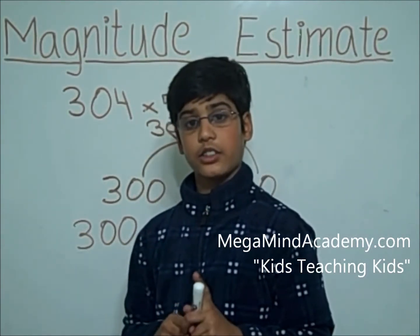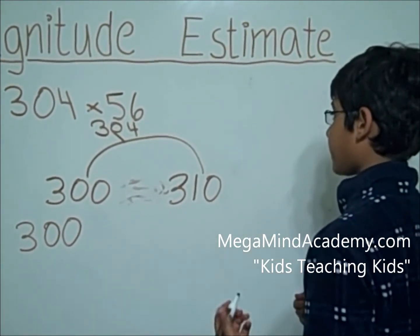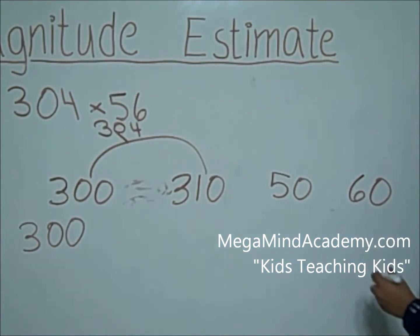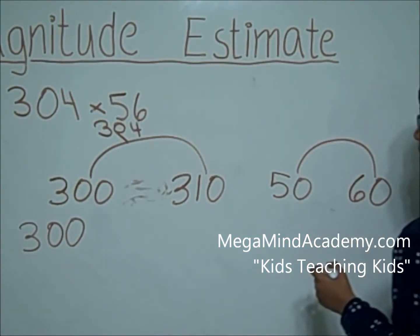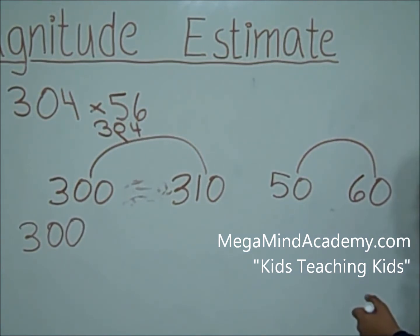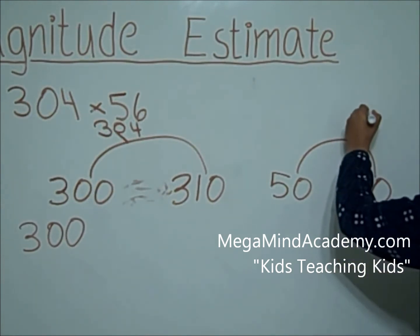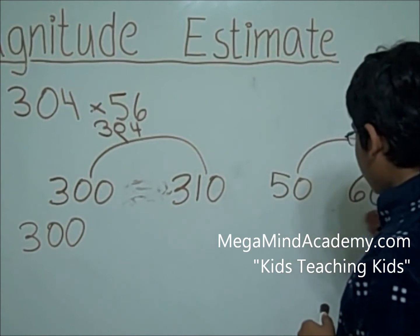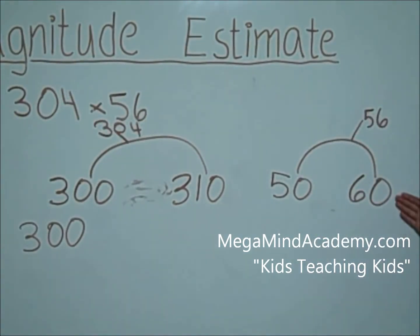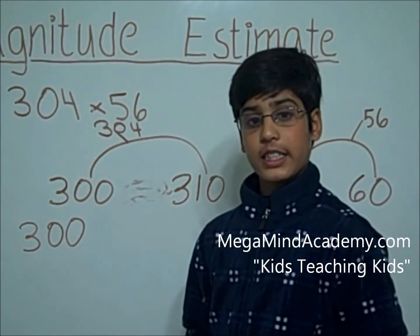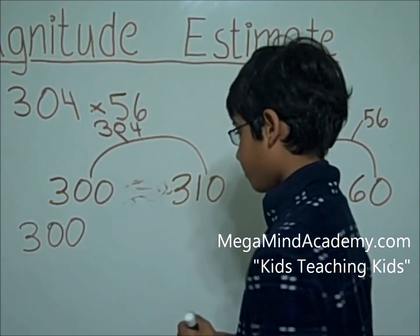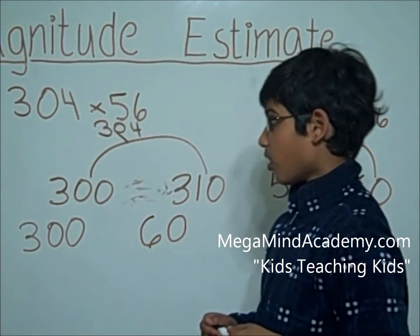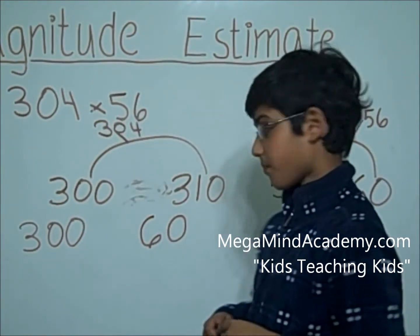Now let's round 56 to the nearest tens. 56 falls between 50 and 60. Now let's draw the line. Where on this line would 56 about be? 56 would probably be right here on this line. It is closer to 60 than to 50, so we're going to put it down as 60. 56 rounded to the nearest tens is 60.